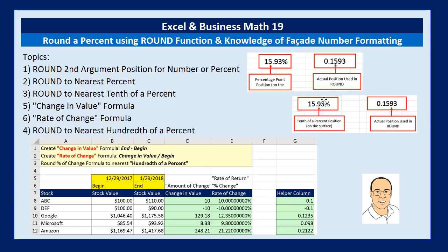You have to actually look underneath at the non-formatted number to pick the right position to round to. We'll see in this video how to round to a percent, a tenth of a percent, a hundredth of a percent. And we'll get to see for the first time a change in value formula and a rate of change formula in a stock example, where we have to figure out how much the stock changed in value and the rate of return, rounding to the nearest hundredth of a percent.